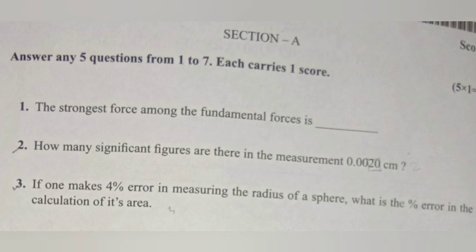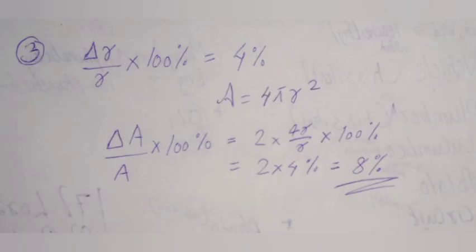Question 3. If one makes a 4% error in measuring the radius of a sphere, what is the percentage error in the calculation of its area? Answer: Delta R divided by R into 100% is equal to 4%. A is equal to 4 pi R squared. Delta A divided by A into 100% is equal to 2 times 4% equal to 8%.